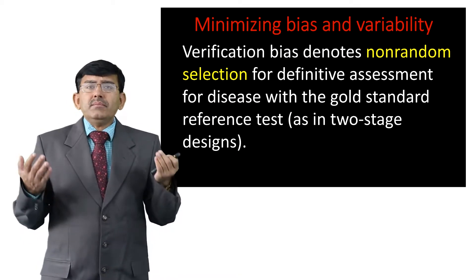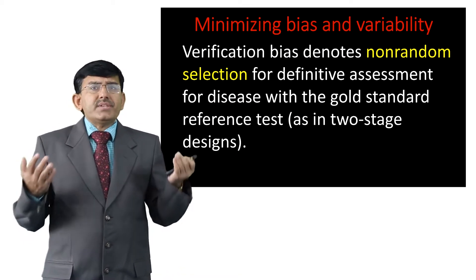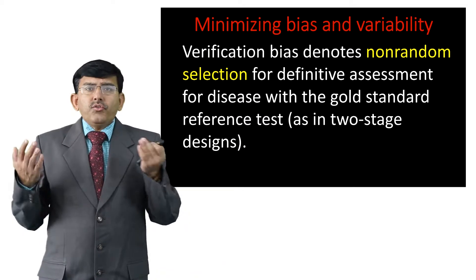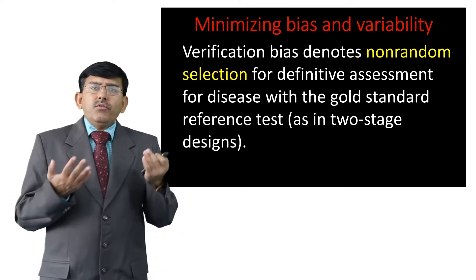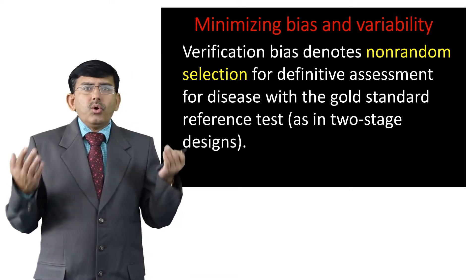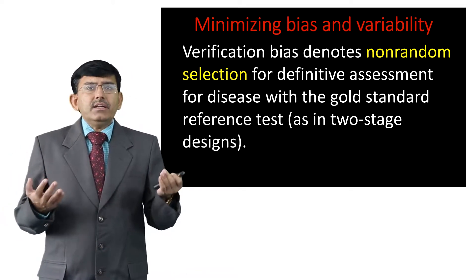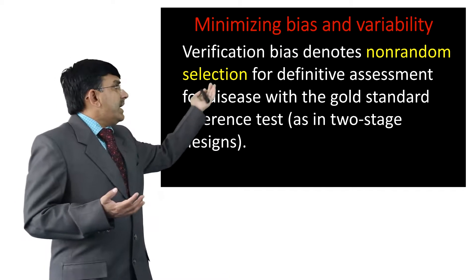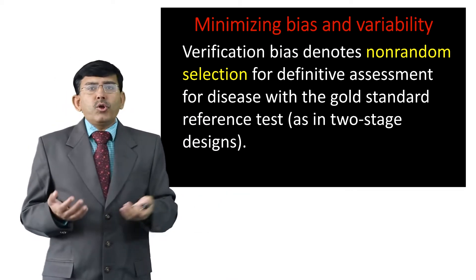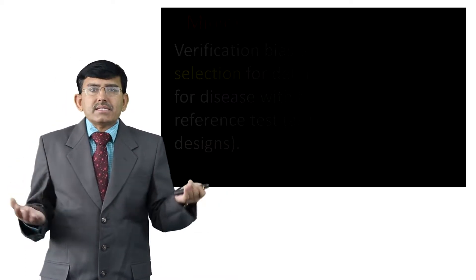Verification bias denotes non-random selection for definitive assessment of disease with the gold standard reference test, as in the two-stage design method which we have followed for grading and classification.